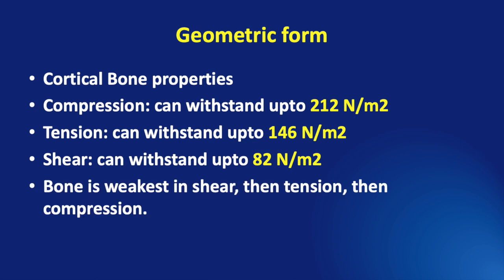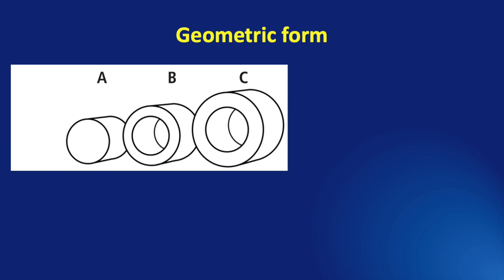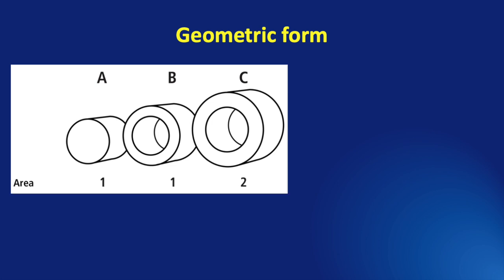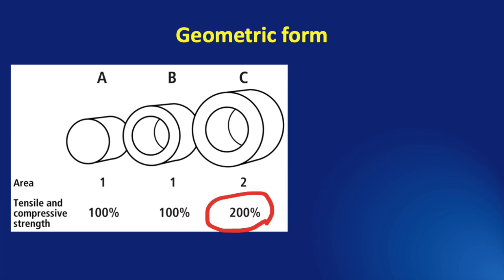Another important characteristic of the bone that can modify its strength is the geometric form. Let us consider three shapes: Sample A is cylindrical but solid. Sample B is cylindrical but hollow with a thin cortex. Sample C is cylindrical, hollow, and has a thick cortex. The surface area of both sample A and B are the same, but the surface area of sample C is double. If we consider the tensile and compressive strength of samples A and B to be 100%, the tensile and compressive strength of model C is doubled to 200%. But when we consider the bending and torsional strength: if it is 100% in shape A, it is 210% in shape B and 459% in shape C. This shows the importance of the shape of the bone in determining its strength.